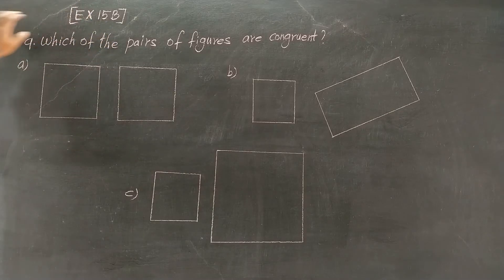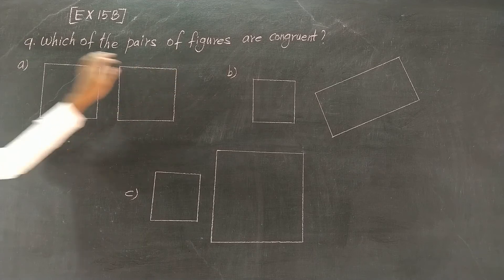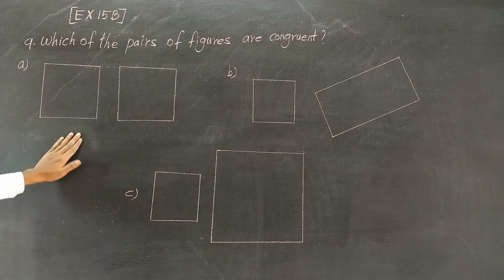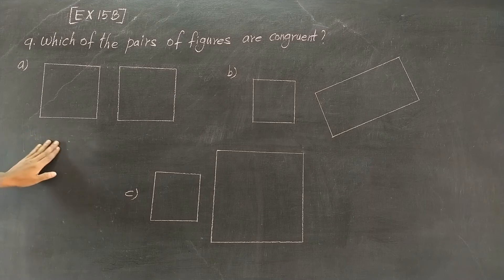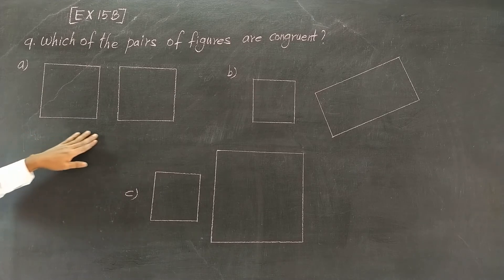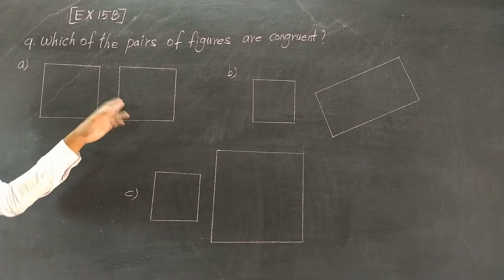Exercise 15B, question number 9: Which of the pairs of figures are congruent? Congruent means the definition: the same shape and size.